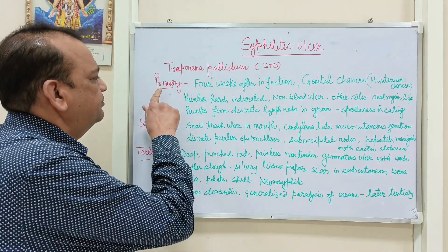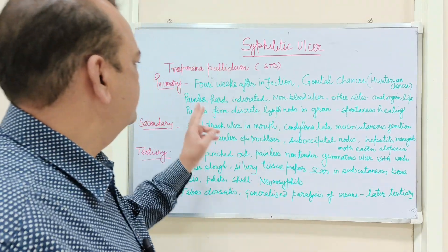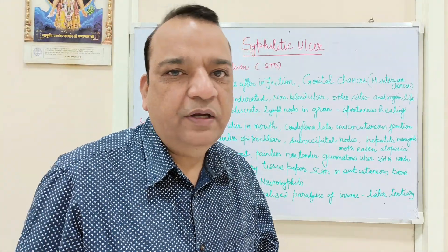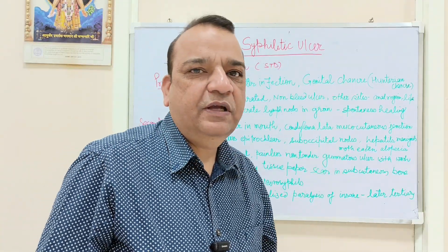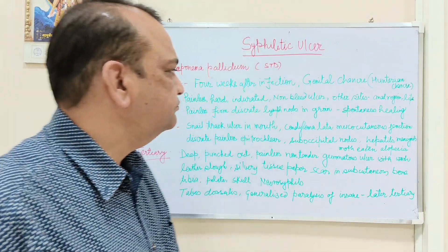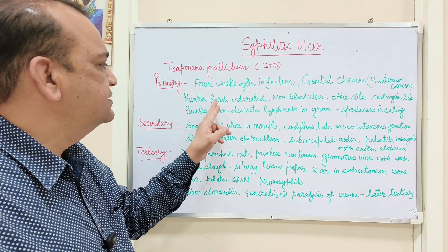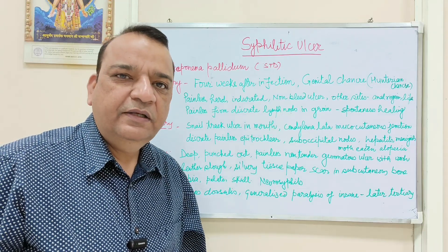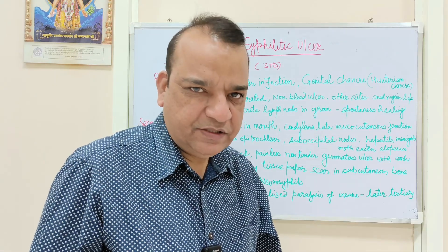In primary syphilis, the genital area is involved. It occurs almost 4 weeks after infection, meaning contact with an infected person. There is a genital chancre — a shallow ulcer in the genitals known as the hunterian chancre. These are painless; this is a very important feature. The ulcer is totally painless, hard, indurated, and does not bleed. Other sites include anal lesions, lips, and breasts.